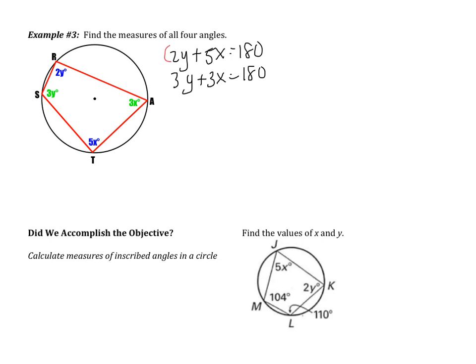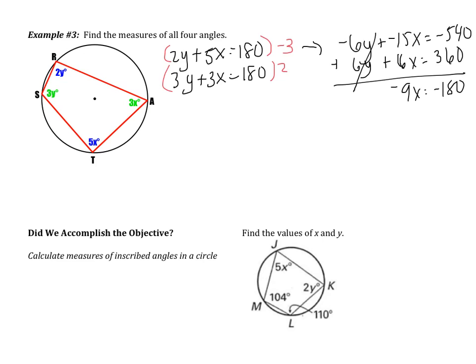So I'm going to multiply my top equation by negative 3 and my bottom equation by 2. I'm looking to eliminate the Y's. My top equation becomes negative 6Y, negative 15X equals negative 540. Bottom equation becomes 6Y plus 6X equals 360. I'm ready to add. My Y's cancel, which is good. I was trying to eliminate them. I then have negative 9X equals negative 180. Dividing by negative 9, I get X equals 20.